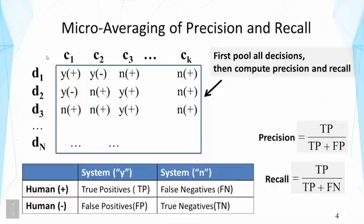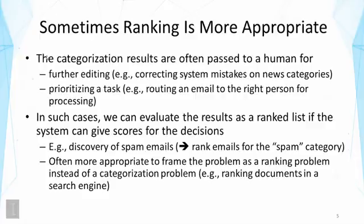Micro averaging treats all instances and all decisions equally, which may not always be desirable. However, we can associate a cost for each combination and compute weighted classification accuracy with different costs or utilities for each specific decision. In general, macro average tends to be more informative than micro averaging because it reflects the need for understanding performance on each category or document. Both macro averaging and micro averaging are very common and you might see both reported in research papers on text categorization.